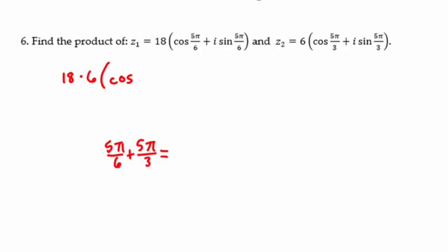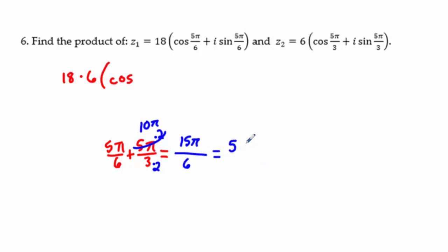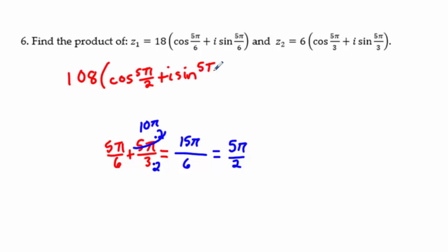To add the angles, we need common denominators. Change 5π/3 to 10π/6, giving 5π + 10π = 15π over 6. Dividing by 3 reduces this to 5π/2. So the angle is 5π/2, and r is 18 × 6 = 108.